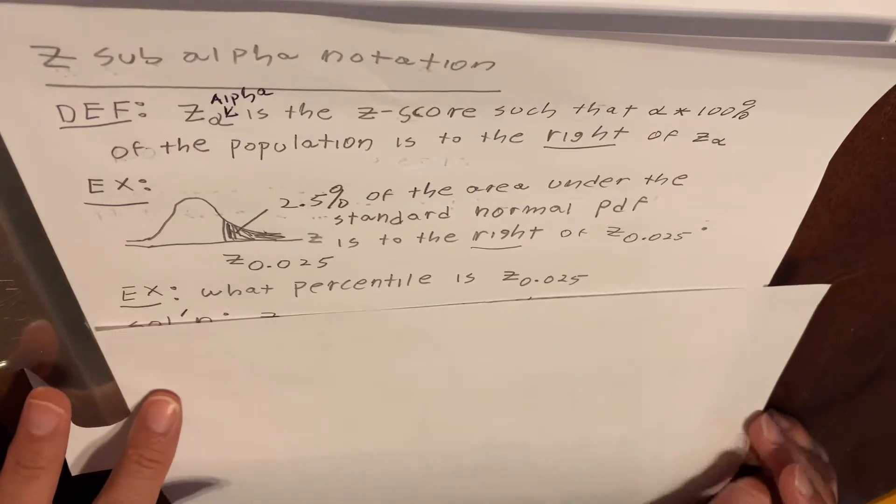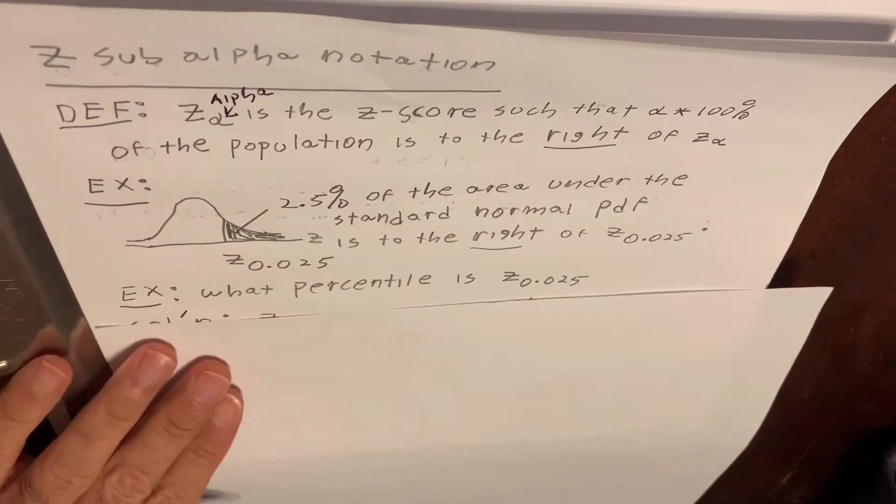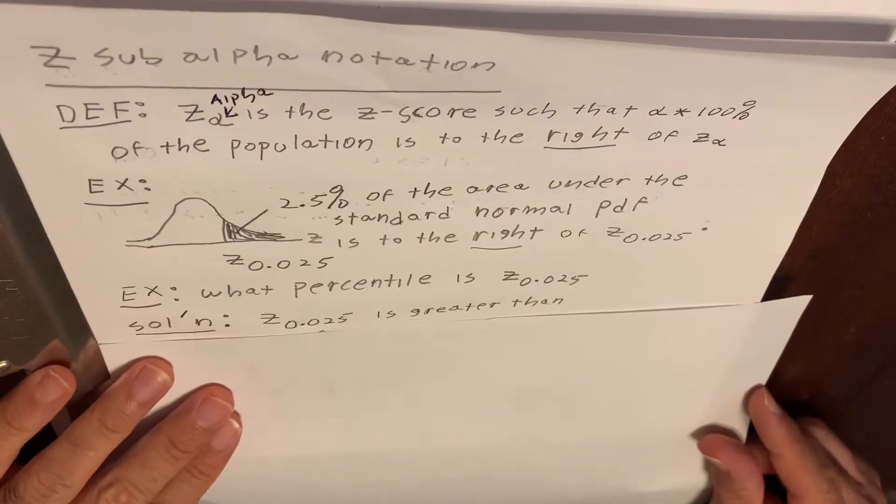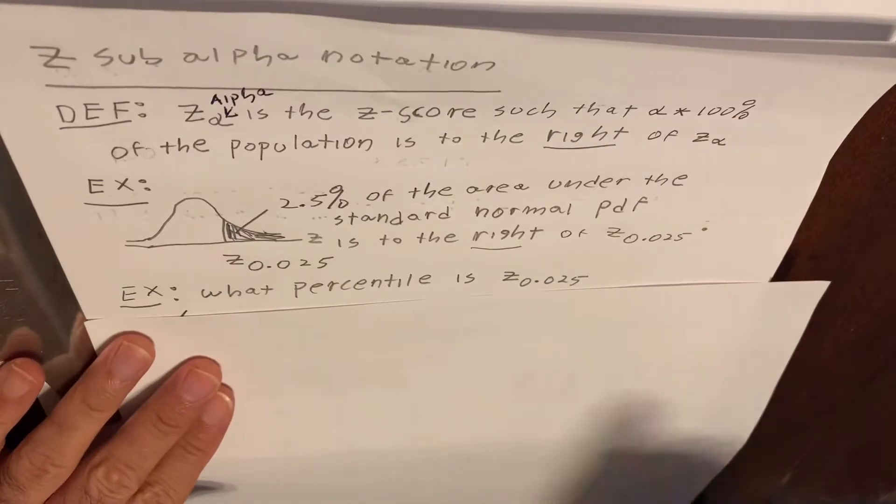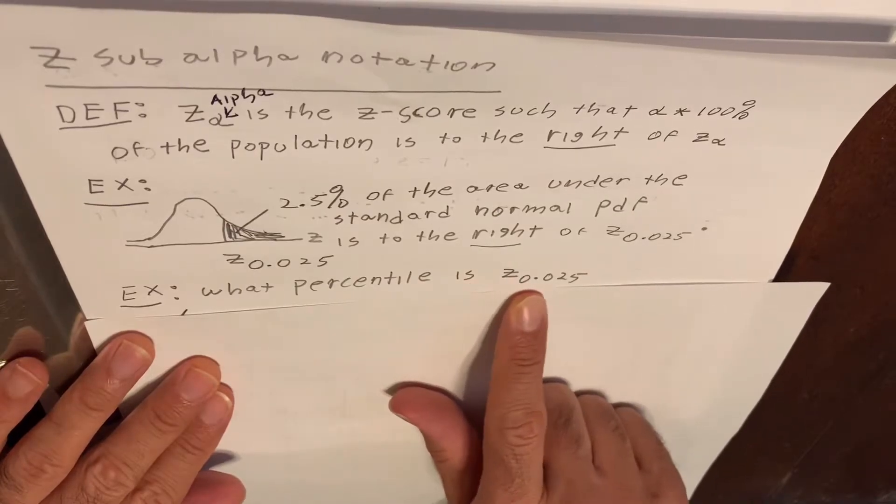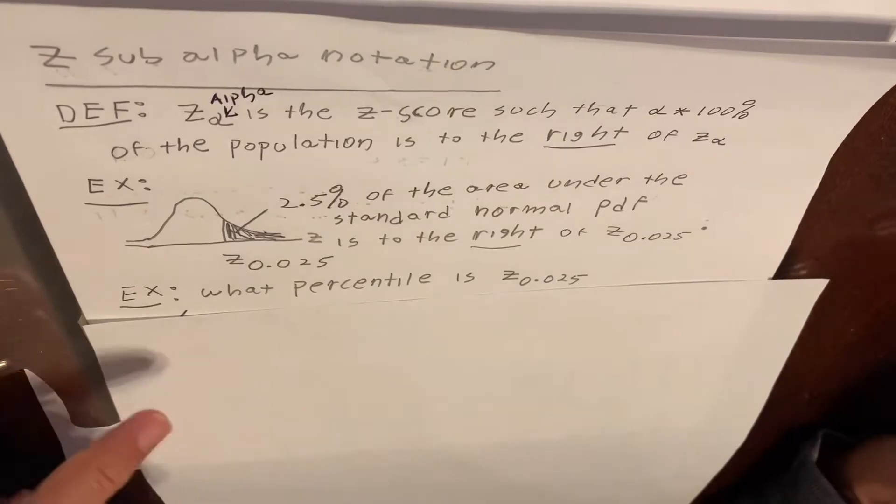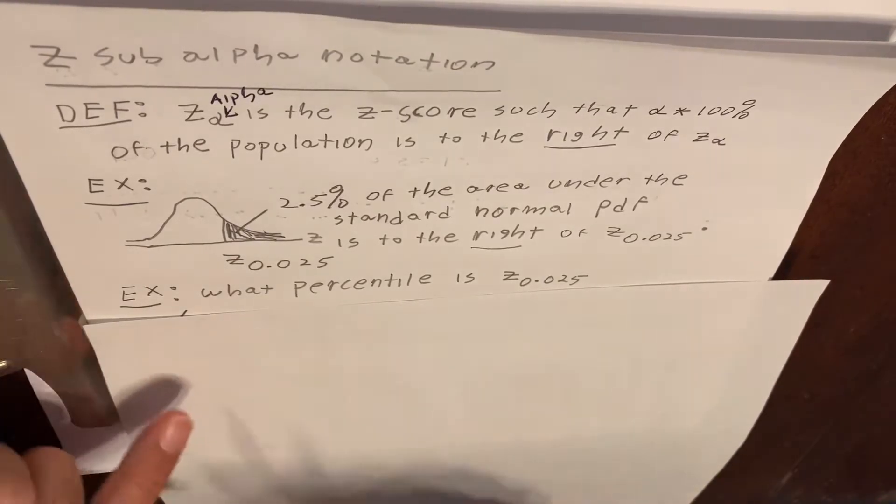Here's something that confuses a lot of students, because in stats classes, we speak about a lot of things like critical values and percentiles and Z scores and Z sub alphas. The next question is what percentile would Z sub 0.025 be? In order to answer that, you have to realize that if 2.5% of the area is to the right,